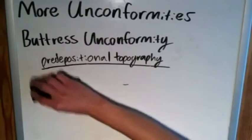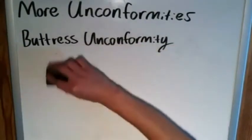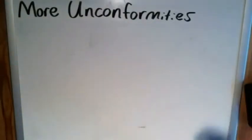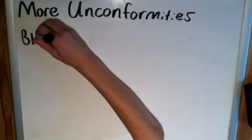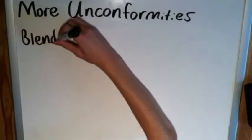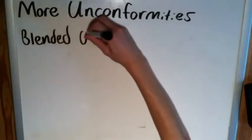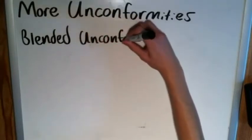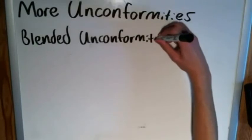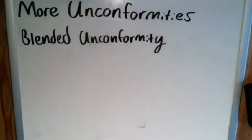Our final type is the blended unconformity. It's less commonly discussed than the first three covered in the previous video, or even compared to the other two in this video — but it's important to know it exists.